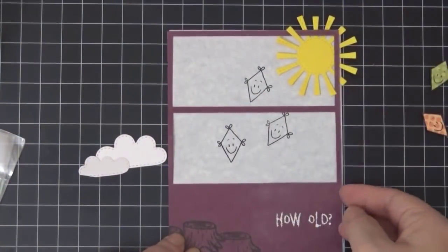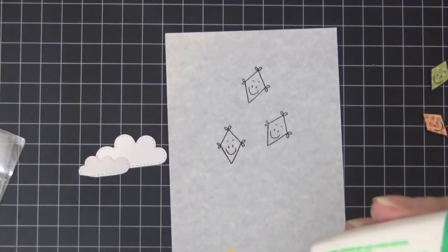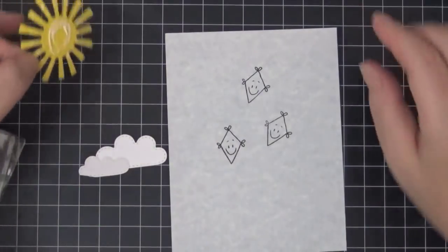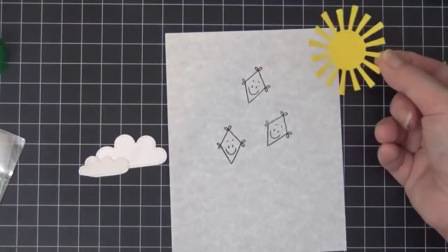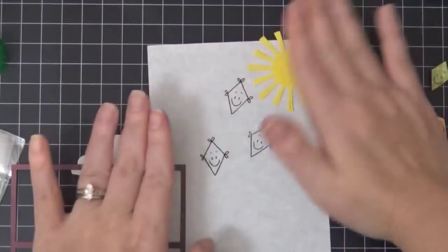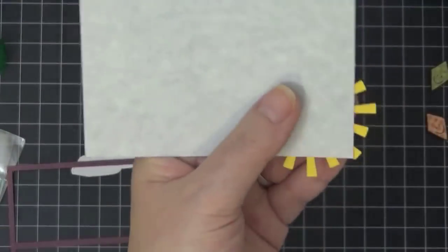And now I'm going to start putting everything together. So I went ahead and used my Tombow Mono Multi Glue, added some glue to my sun, and I'll be putting that in the corner. Top right corner there. And I'm going to cut off the excess.